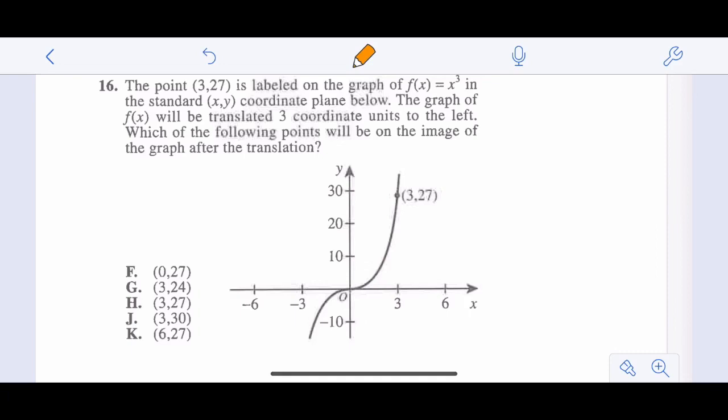Point 3, 27 is labeled on the graph f of x, x cubed, in the standard x-y coordinate plane below. The graph will be translated three units to the left. So we're moving three to the left, minus three to the left. Which of the following points will be on the image of the graph f after the translation. We're just moving three to the left. One, two, three. So we're going here, three units there. That's our x coordinate right here. One, two, three will be at 0, 27. So 0, 27, just three units to the left. That's a pretty easy concept question. So F.